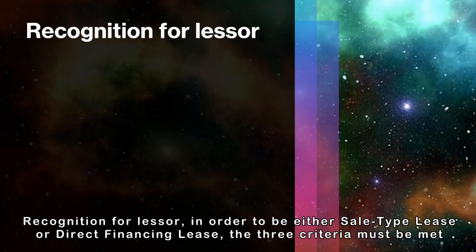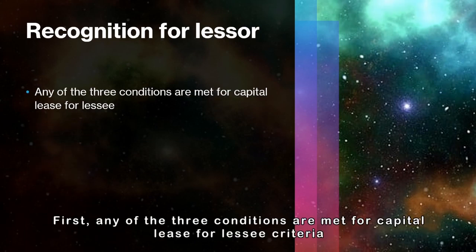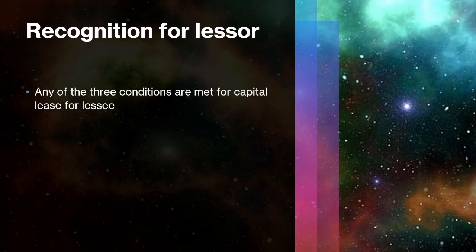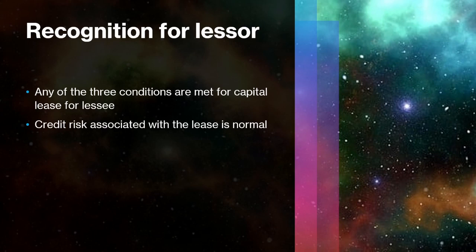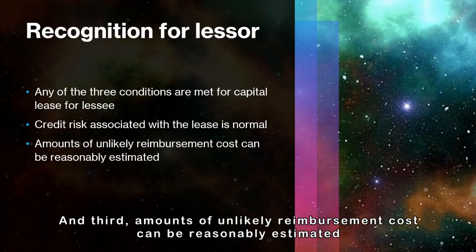For recognition for the lessor, in order to be either a sale type lease or direct financing lease, three criteria must be met. First, any of the three conditions are met for capital lease for lessee criteria. Second, credit risk associated with the lease is normal. And third, the amount of unlikely reimbursement costs can be reasonably estimated.